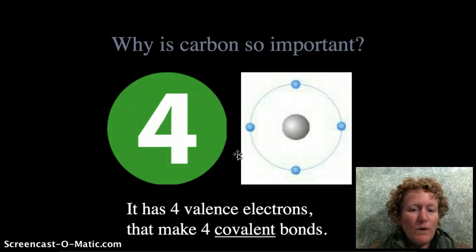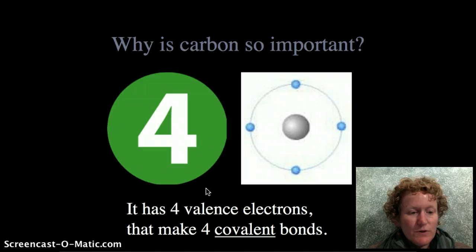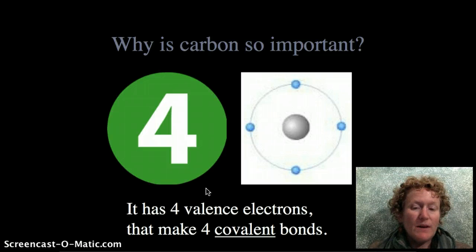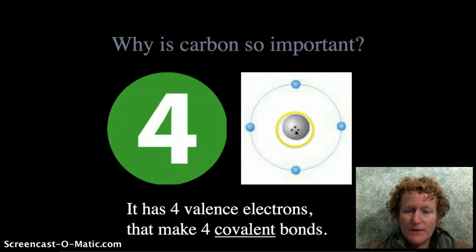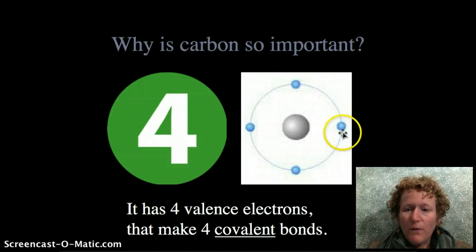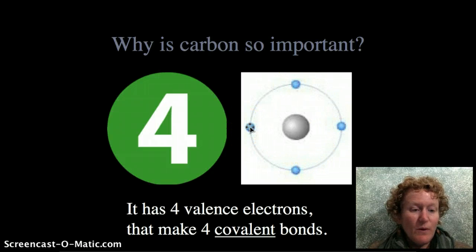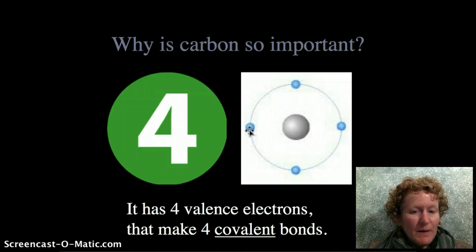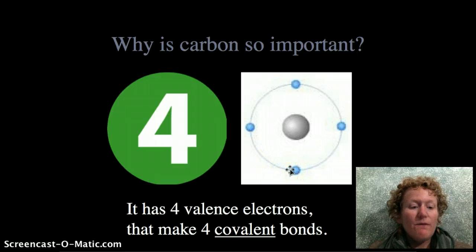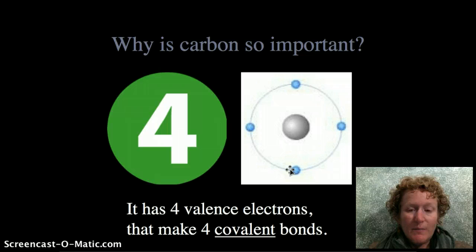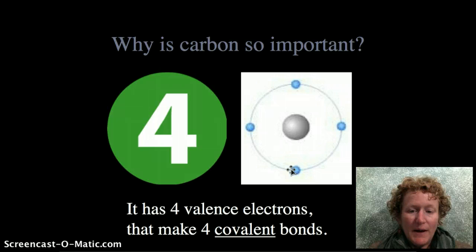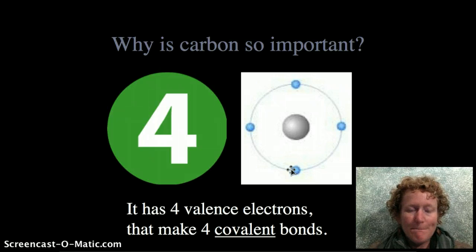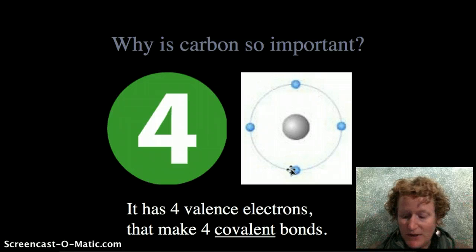Carbon is so important and so crucial to biochemistry and organic chemistry because it has four valence electrons. You can see here's the nucleus and here are four electrons. Remember, electrons are really important when we're talking about bonding. This carbon atom has four electrons so it can make four covalent bonds. Remember, those covalent bonds are really strong bonds and they're very important to biology because you can make big molecules with strong bonds and you have lots of places to attach things.